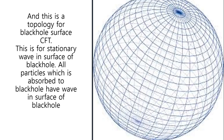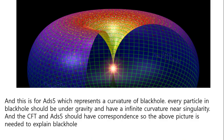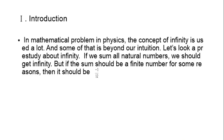This is a topology for the black hole surface — the CFT. This is for a stationary wave on the surface of the black hole. All particles absorbed into a black hole have a wave on the surface of the black hole. This is for ADS-5, which represents the curvature of the black hole. Every particle in the black hole should be under gravity and have infinite curvature at the singularity, and the CFT and ADS-5 should have correspondence. So the above picture is needed to explain the black hole.